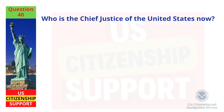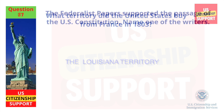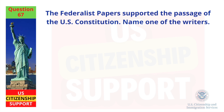Who is the Chief Justice of the United States now? John Roberts. What territory did the United States buy from France in 1803? The Louisiana Territory. The Federalist Papers supported the passage of the US Constitution. Name one of the writers. James Madison.